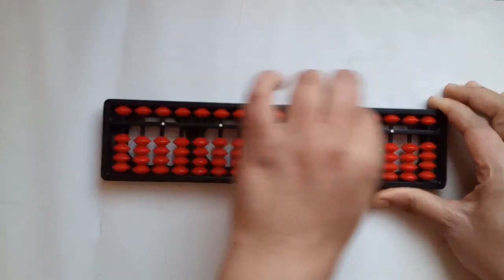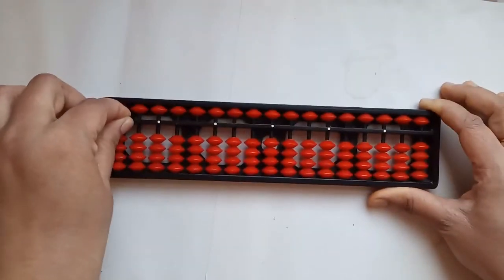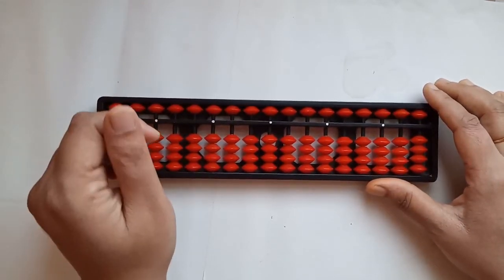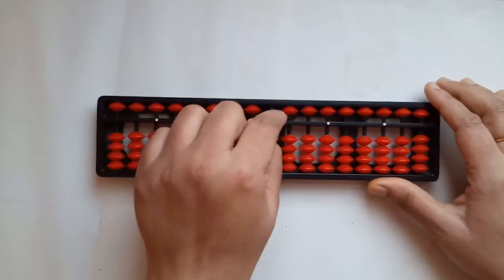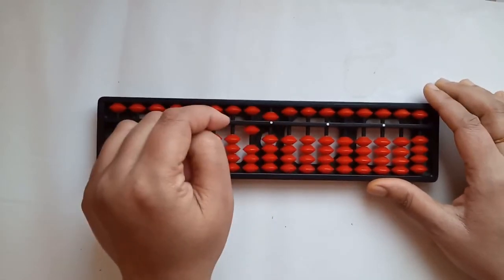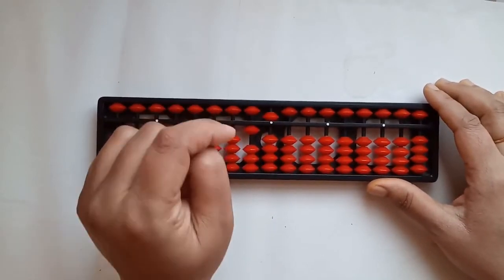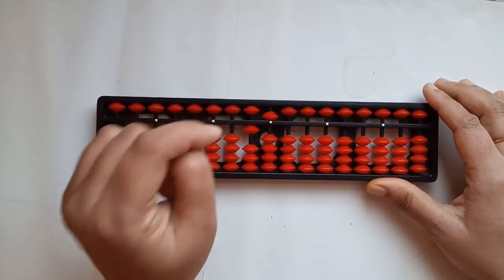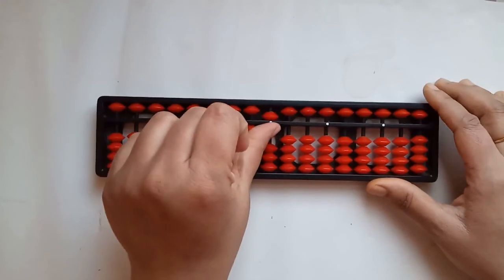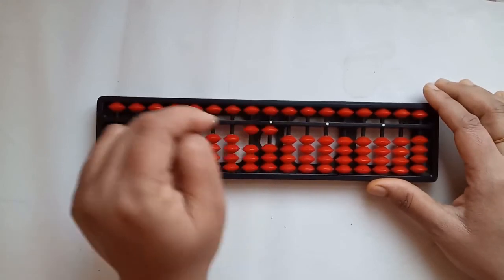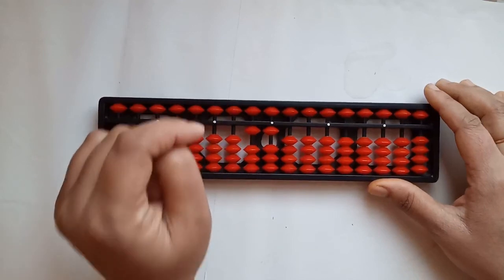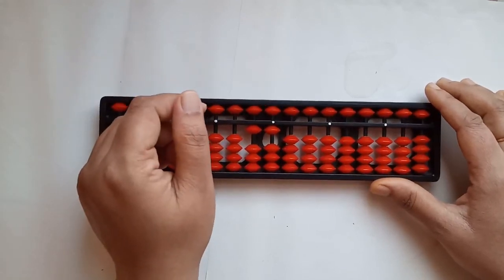Next, let's try 15 minus 4. We see a 5 involved. So, we definitely are going to use 5's complement to do the subtraction. 4's 5's pair is 1. We add 1 and subtract 5. And it's done. We have 1 1, 11.